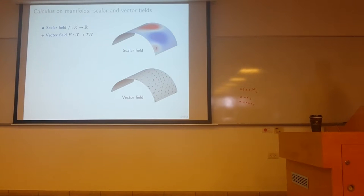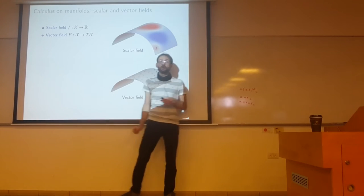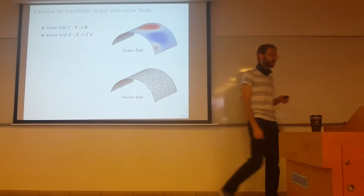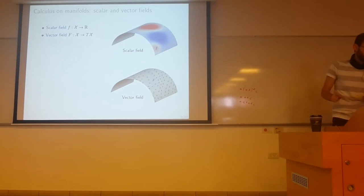We can also talk about vector fields. So vector fields are vectors that live in the tangent space in the manifold. Technically, it's a map from the manifold to the tangent bundle. This is the joint union of all the tangent spaces. Think of them as at each point we have a tangent space, it's an arrow, it's a vector on the tangent space.